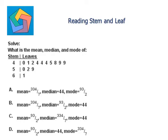The entries in the stem and leaf plot are read by taking one stem and leaf together. For example, 4|0 is read as 40. Similarly, 4|1 is read as 41, and 4|2 is read as 42.